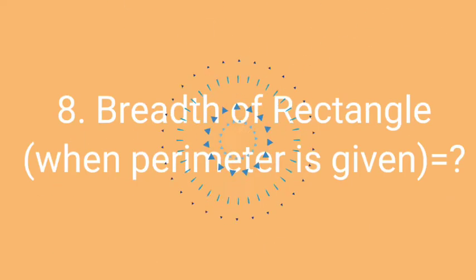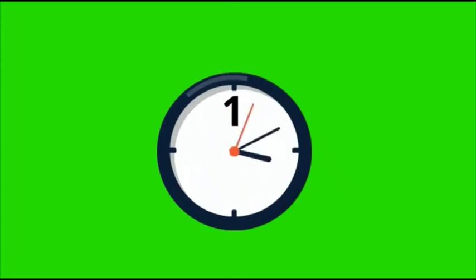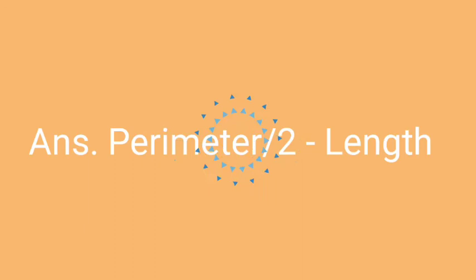Our next question is question number eight: Breadth of rectangle when perimeter is given is equals to what? Think the correct answer of this question within 10 seconds.